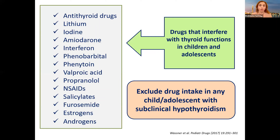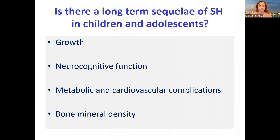Here you can see a very long list of drugs that could cause subclinical hypothyroidism — just a reminder to exclude any drug intake in a child or adolescent with subclinical hypothyroidism. Especially the anti-epileptics: we see a lot of cases in children on phenobarb and phenytoin. So please note that. Now, the question: is there a long-term sequelae of subclinical hypothyroidism in children and adolescents?